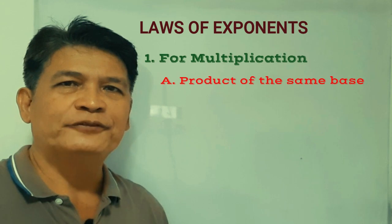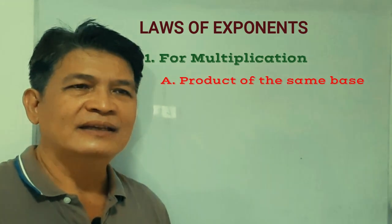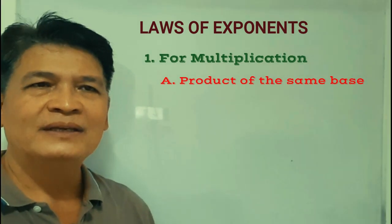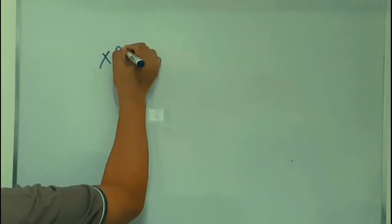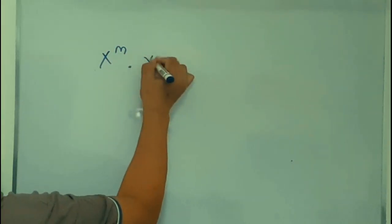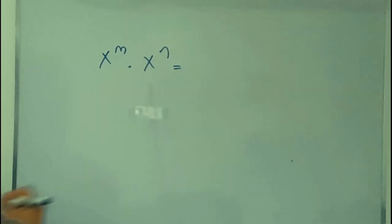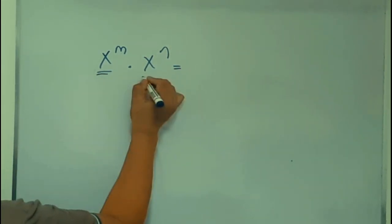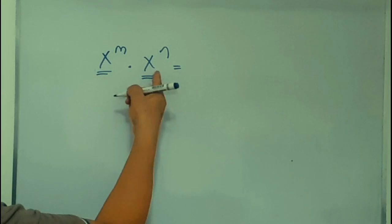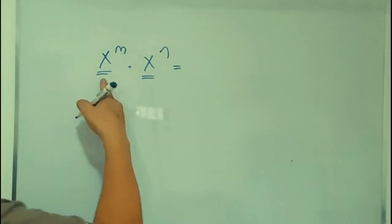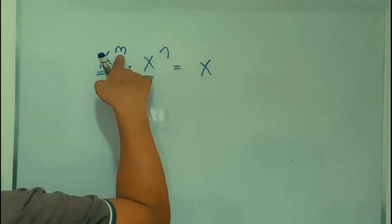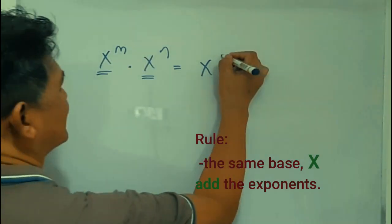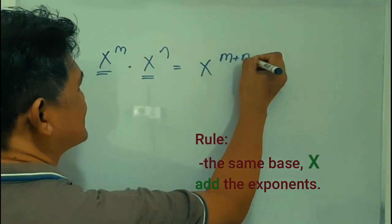Now let's take Rule Number 1 for the laws of exponent for multiplication: the product of the same base. If you have x raised to m times x raised to n, your common base is x. The rule is: you keep the common base x and then add the exponents — m plus n.